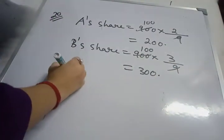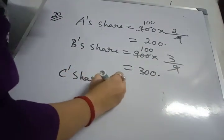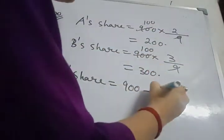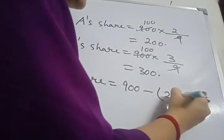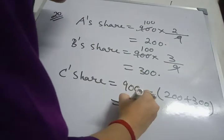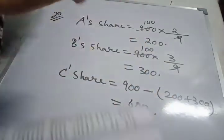Now C's share is how much? Total is 900. 900 minus A's share plus B's share. That means 200 plus 300 that is 500. So C's share is 400. Okay.